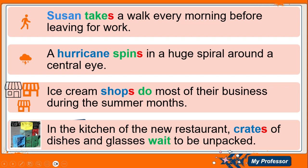Another example: 'In the kitchen of the new restaurant, crates of dishes and glasses wait to be unpacked.' The subject is 'crates' — plural, many, already carries an S. Therefore the verb is not going to add an S, which is why we have the verb form 'wait.'